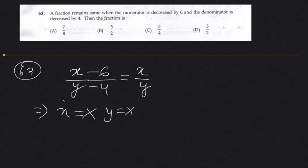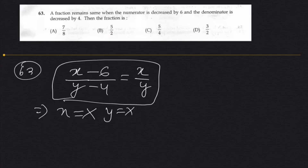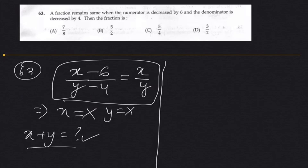We need another equation, which is not given in the question. If they had given the sum of the numerator and denominator as equal to something, then we would have got the answer. There is insufficient information to solve it directly using formulas and equations.